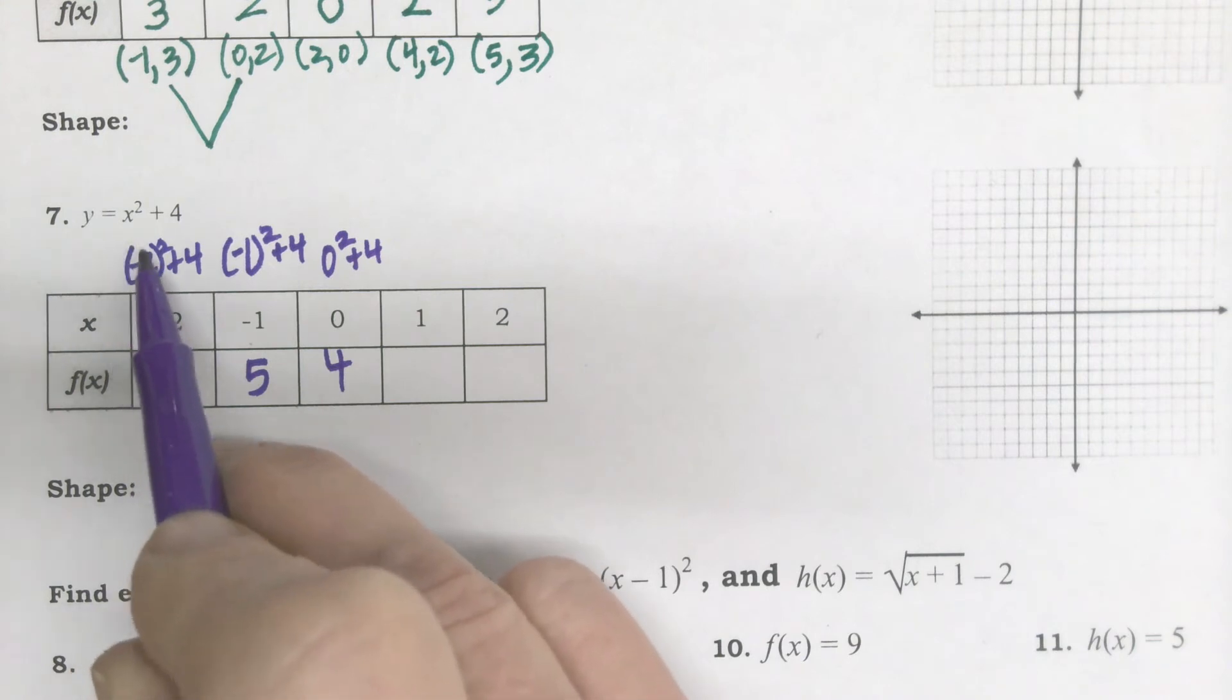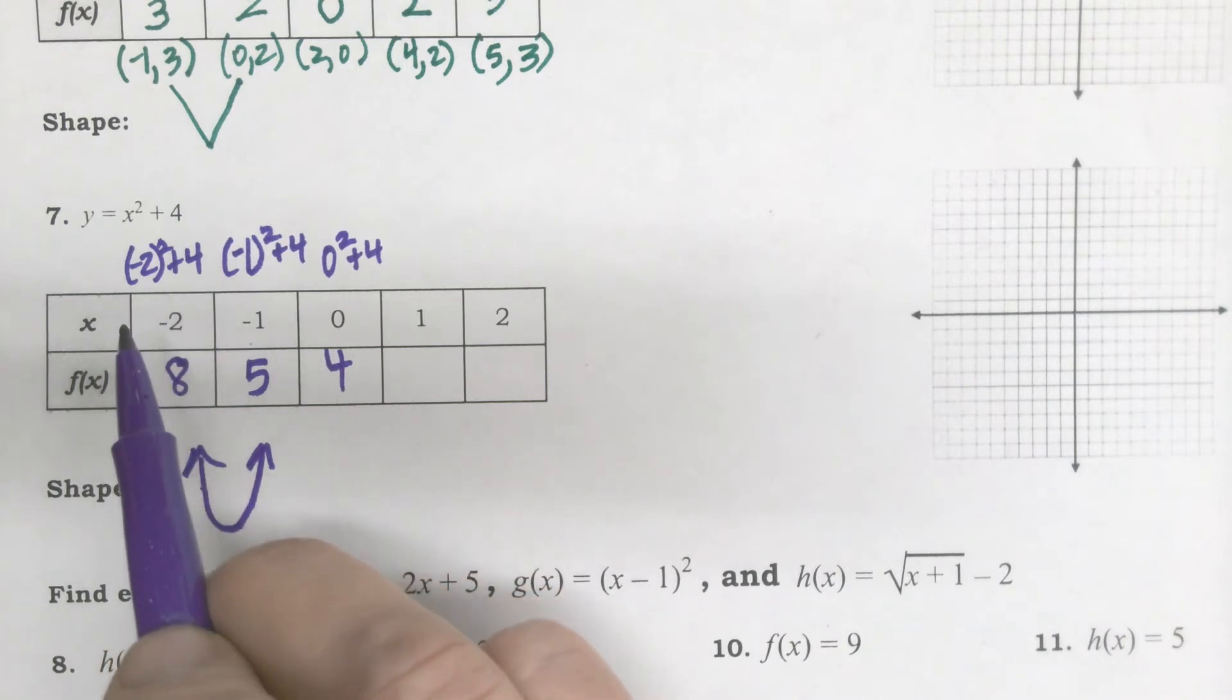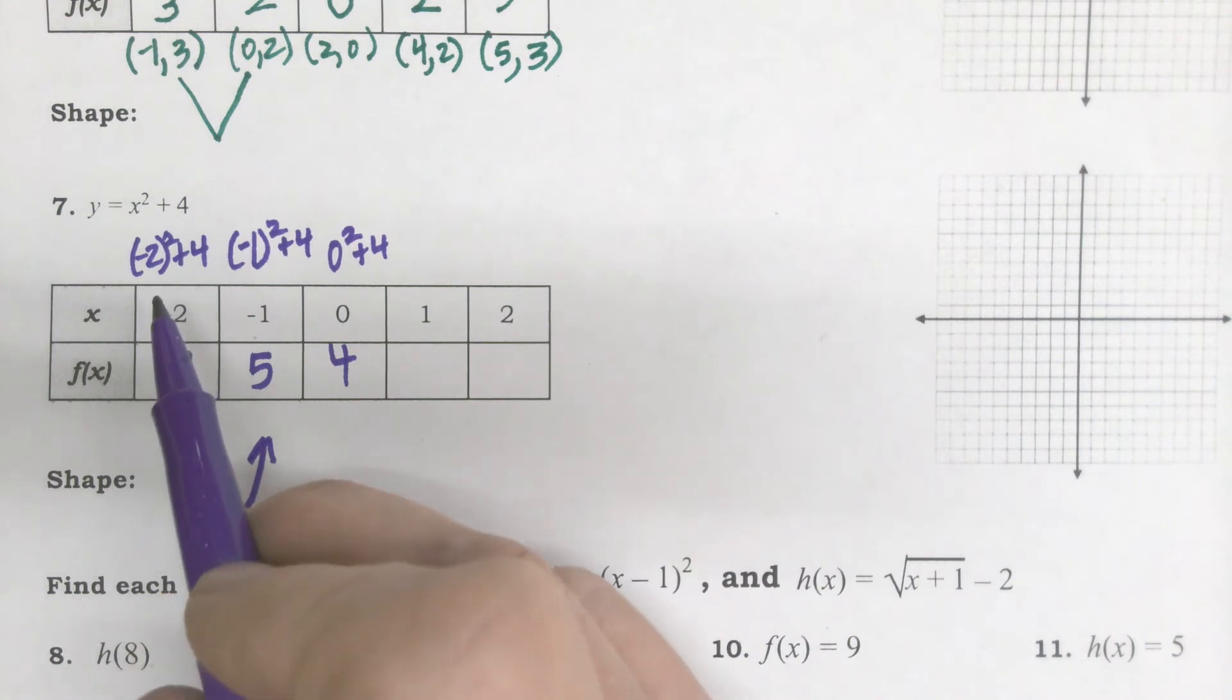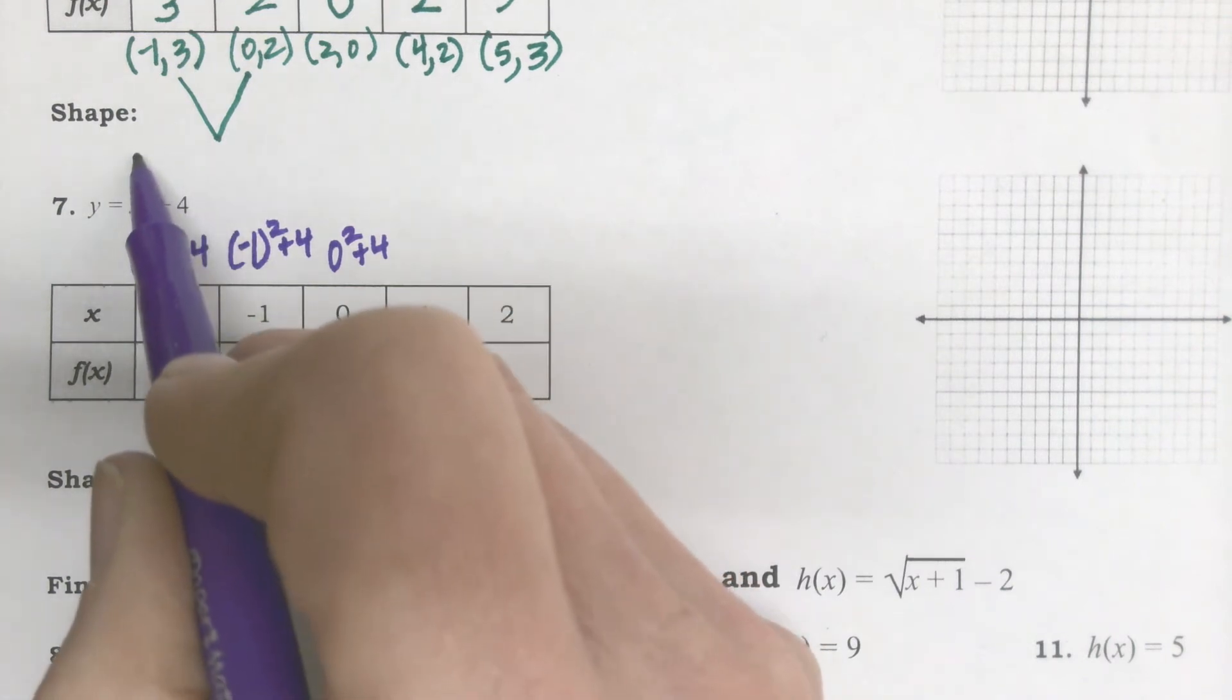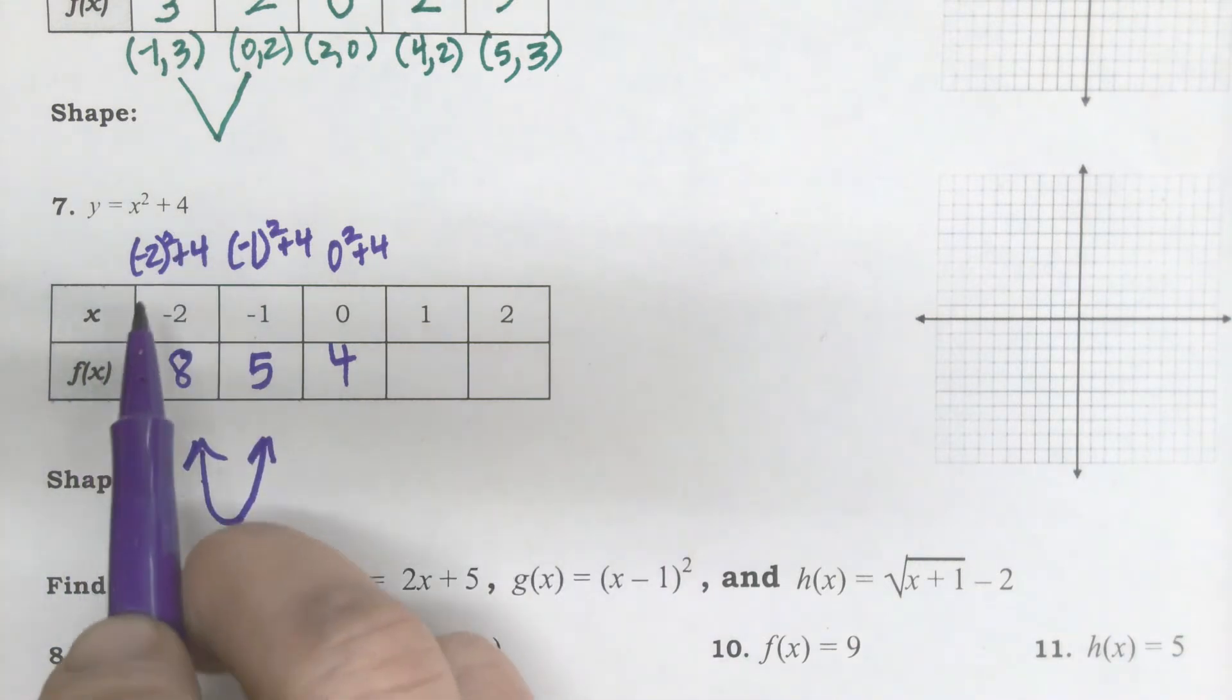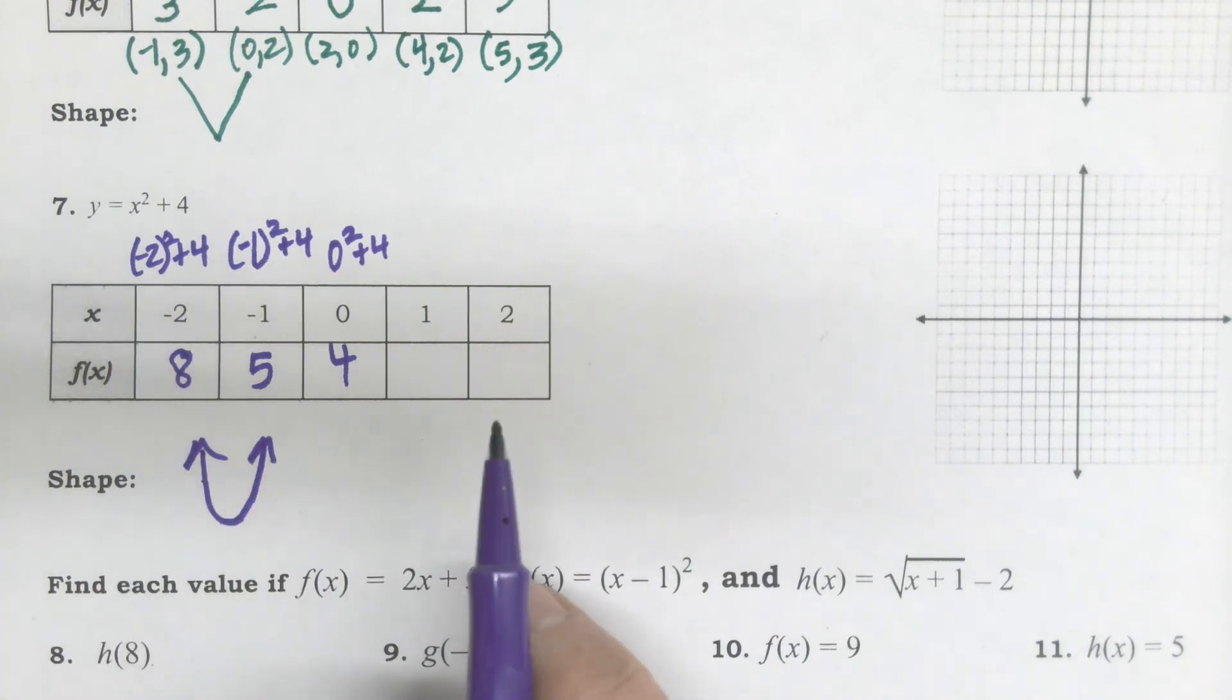Because when you squared your negative 2, you didn't make it positive. This is negative 2 times negative 2. If you use your calculator to do this, which you absolutely can, make sure that you put parentheses around the negative 2 before you put the square on it. See how I wrote those parentheses on there?